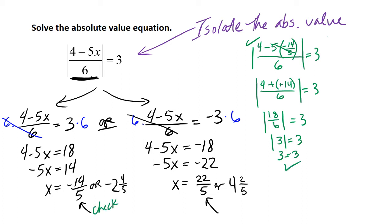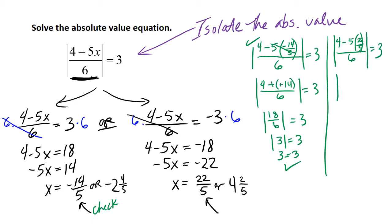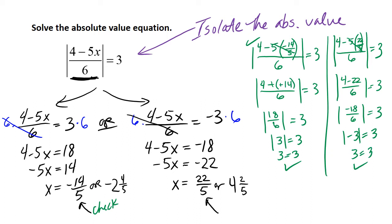Now let's check the second solution, x equals 22 fifths. The absolute value of 4 minus 5 times 22 over 5, all over 6 — is that equal to 3? The 5s cancel, giving 4 minus 22 in the numerator over 6. 4 minus 22 is negative 18. Negative 18 divided by 6 is negative 3, and the absolute value of negative 3 is 3. So both of those solutions check.